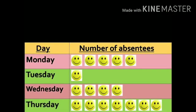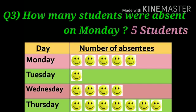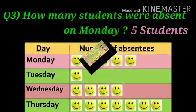The third question is: how many students were absent on Monday? We need to count the smileys in the Monday column. Here are five smileys. So the answer is five students were absent on Monday.